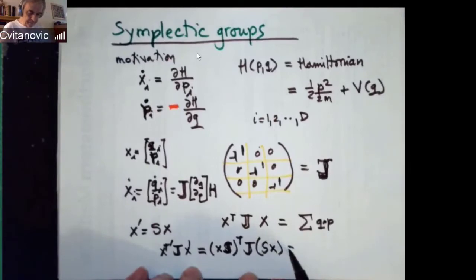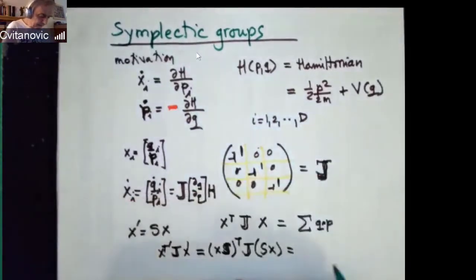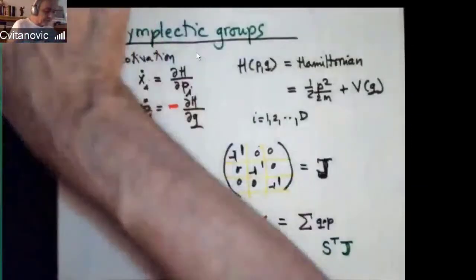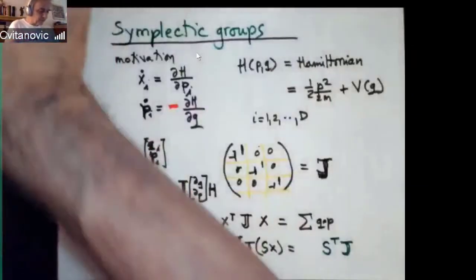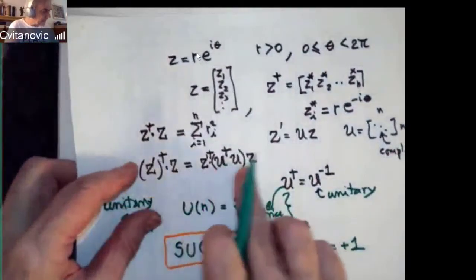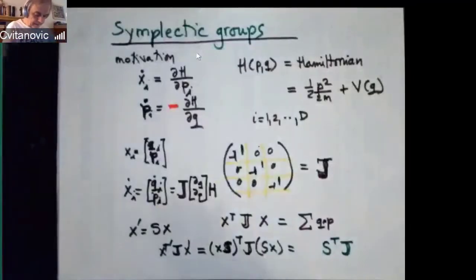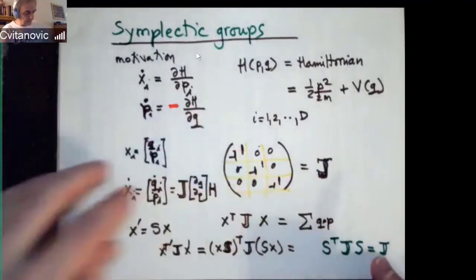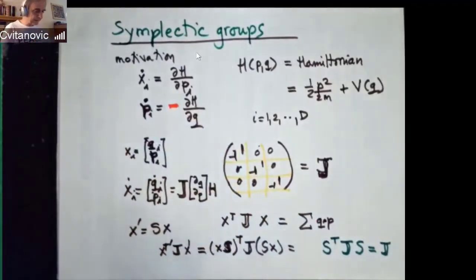And that now gives you a rule that says that's done as long as the matrix S transpose times this form—for unitary groups this was identity, this thing here, I mean for orthogonal groups. For unitary groups, you require that this thing is identity, but now you require that your matrix is such that it preserves the phase space volume, pairwise relation between momenta, et cetera. So these matrices are called symplectic matrices.